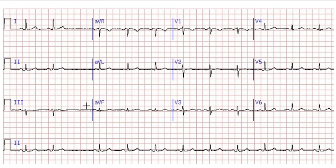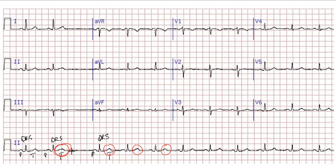Coming back to our ECG: this is P, QRS, T — P, QRS, T — P, QRS, T — and so on. Now look at this T wave and compare it with the other T waves. Something is different here. Remember: it's always the P that changes its position, and T always follows QRS. These T waves are followed by QRS, but this particular one looks different from all the others — because here a P wave is superimposed on the T wave.